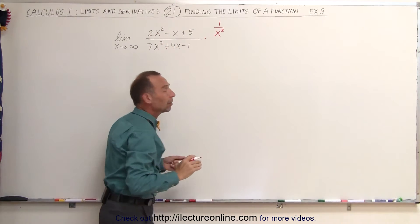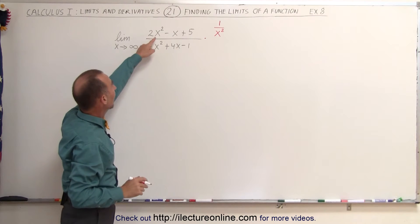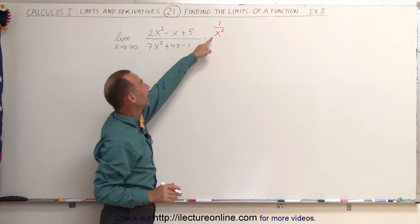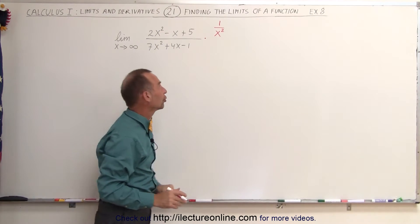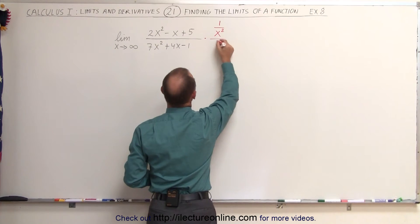So in this case, if the highest exponent is 2, you're going to divide by x squared. If this was x cubed, you would have to divide by 1 over x cubed.